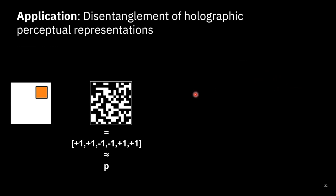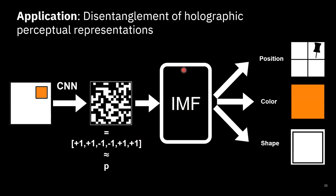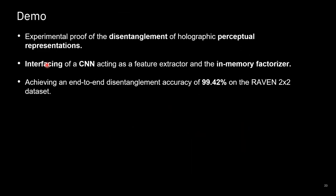Now we look at an interesting application — disentanglement of perceptual representations. Using a CNN, we get a holographic representation corresponding to an image; with the trained CNN it will be an approximation to the product vector. We feed this into the in-memory factorizer, which outputs the different attributes for the given image. We try this on our hardware platform as a demo, using a set of images synthetically generated using the RAVEN dataset for the two-by-two grid size, for an end-to-end demo.